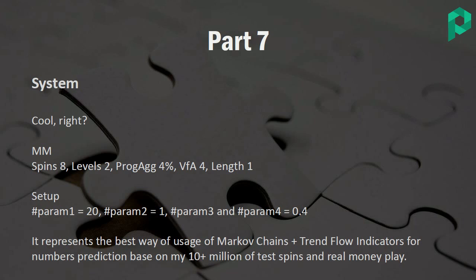The setup is important. I'm typically evaluating 20 spins back, two times. I'm using overstep 1 because I'm not multiplying the 20. But if I play with parameter 1 at 8 spins only, then I'm also using overstep 2, so I'm actually analyzing 16 spins.